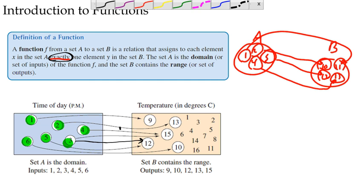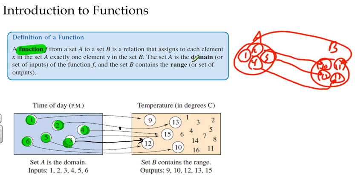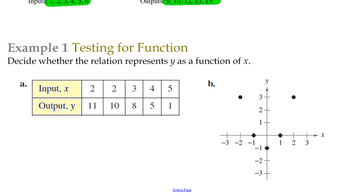Let's also define some other vocabulary terms. Set A is called the domain — all the numbers in the first set. So all the x values are called our domain. All the y numbers are called our range. So the domain is our x values and the range is our y values. Those are key vocabulary words — function, domain, and range — and we'll be working with these a lot. Now let's go to example one, where we test for a function. We're asked to decide whether the relation represents y as a function of x.